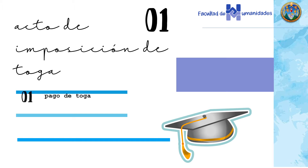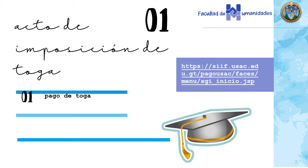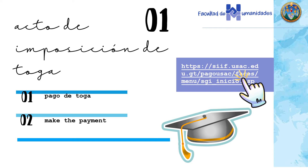First of all, there's a payment to make. Go to cif.usac.edu.gt/pagosusac and choose pago de toga. You must pay 50Q for yours and 70Q for your padrino. Pay at Banrural, Banráb, or GIT Continental, and take your receipt to Secretaría Académica so you can enroll.